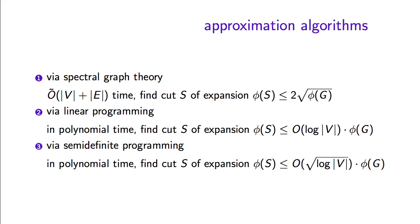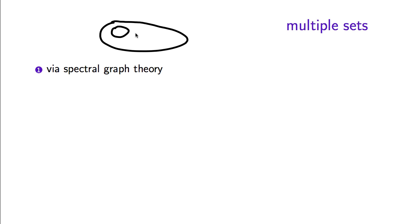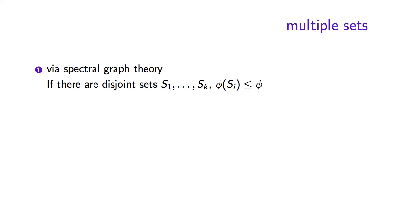It remains an open question whether there is a polynomial time or even sub-exponential time algorithm that achieves a constant factor approximation. We also mentioned that if a graph contains multiple non-expanding sets — say, non-overlapping — it would be interesting to find all of them, since in a clustering problem this corresponds to multiple clusters, and in a social network to multiple communities. This is a somewhat less studied problem, but one result we will show is achieved by spectral graph theory.